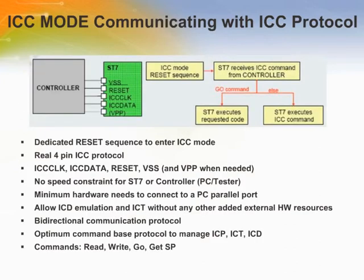The in-circuit communication (ICC) protocol is used by the ST7 microcontroller to communicate with an external controller. It is a half-duplex serial synchronous communication protocol using two lines — ICC clock and ICC data — and communicates with an external controller using only four wires including VSS. This protocol is used to download a program into the RAM for execution. Testing or debugging tools can also be written using the ICC protocol.